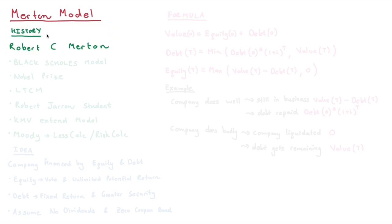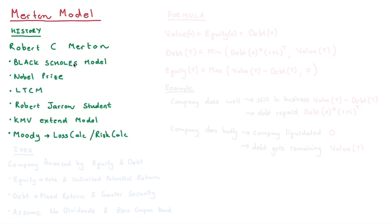Let's start with the history. The Merton model was created by Robert Cox Merton, who is famous for being part of the Black-Scholes model, for which he won the Nobel Prize. He was also part of the Long-Term Capital Management Fund that used the Black-Scholes model, which was very effective for a couple of years, getting plus 40% returns.